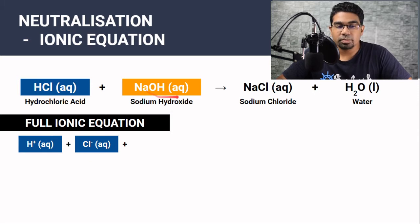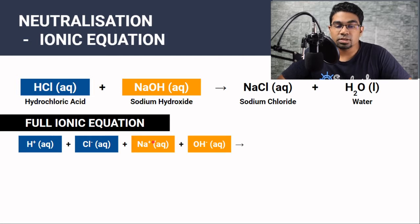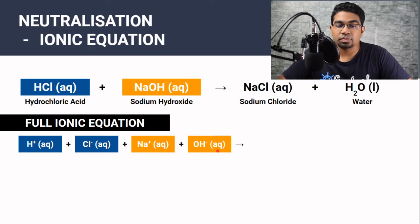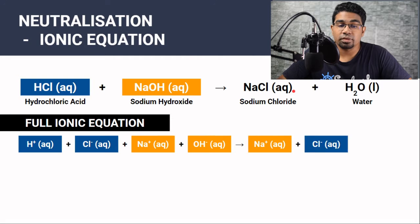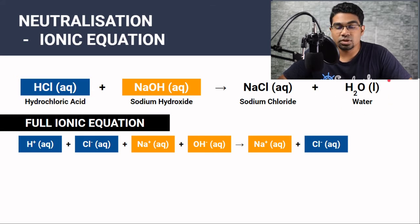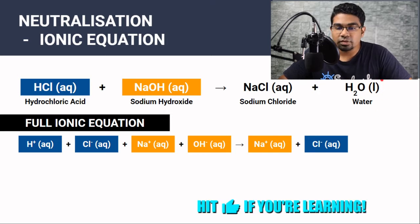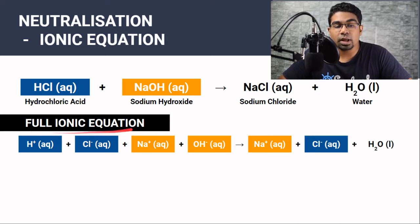Then we have sodium hydroxide, which is also in aqueous solution, so the same thing happens: we have Na⁺ ions in aqueous solution and OH⁻ ions in aqueous solution — these are the reactants. When we look at the products, sodium chloride is aqueous, so we have Na⁺ and Cl⁻ ions in aqueous solution. But water is not in aqueous solution — water is a liquid and exists as water molecules. So whatever is not in aqueous solution, we retain the formula exactly: H₂O in liquid form. This is the full ionic equation.